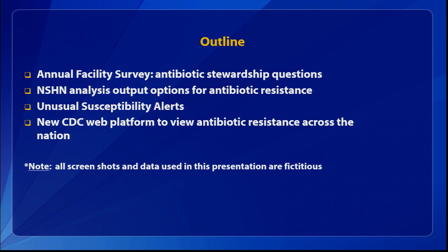Here's a quick outline. I'll first reiterate about the annual facility survey, show you how you can pull the stewardship questions out and how we apply an algorithm to those questions to determine whether your facility meets all seven of the core elements that Dr. Hicks was talking about. I'll then talk about the NHSN analysis output options for antimicrobial resistance, cover the unusual susceptibility alerts, and finish with a demo of the Patient Safety Atlas, a new web platform just released by CDC to allow you to view resistance data in your state or across the nation.